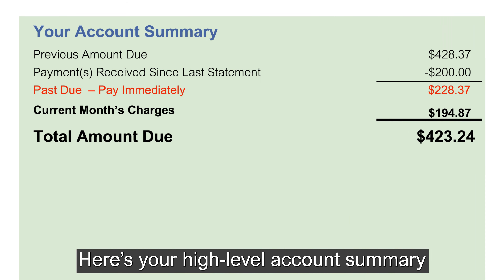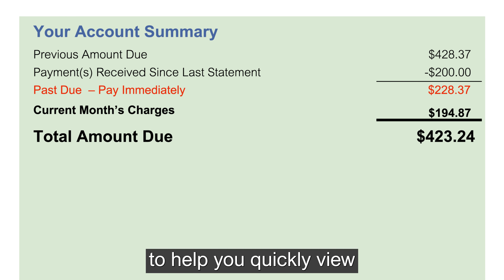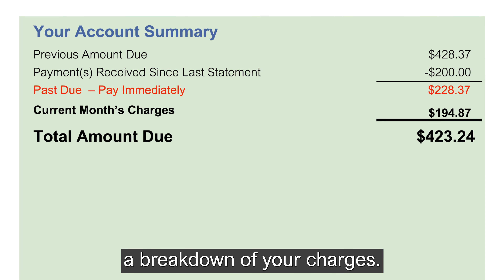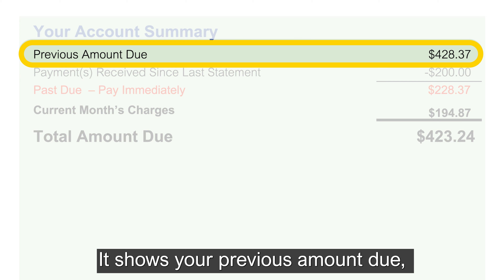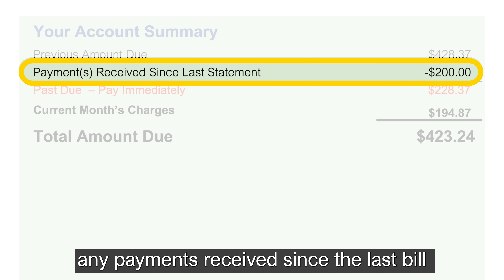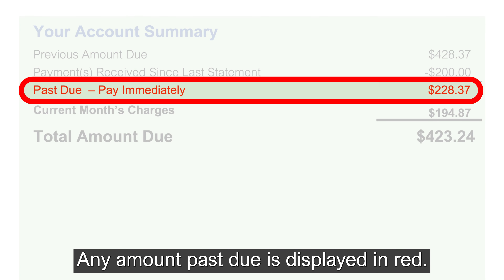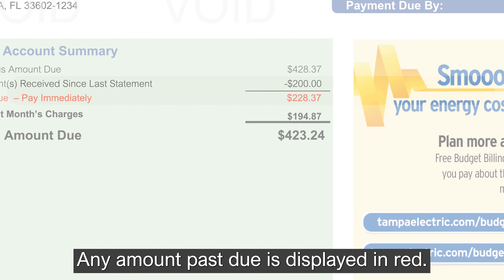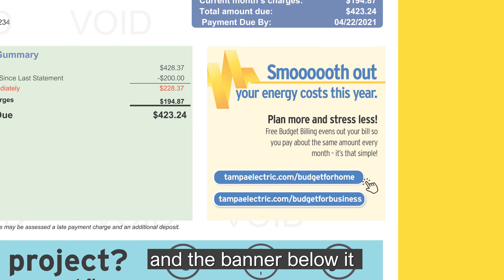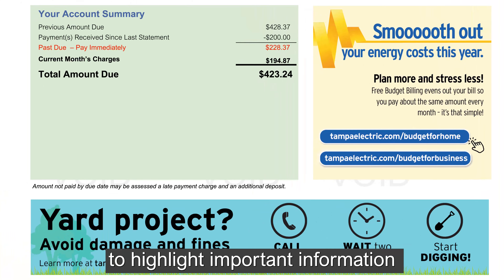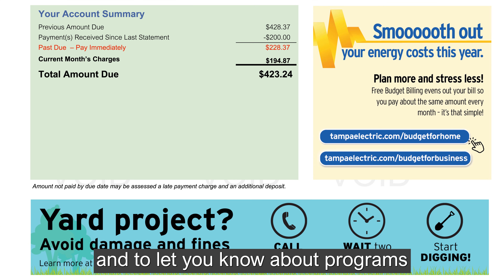Here's your high-level account summary to help you quickly view a breakdown of your charges. It shows your previous amount due, any payments received since the last bill, and your current charges and due date. Any amount past due is displayed in red.